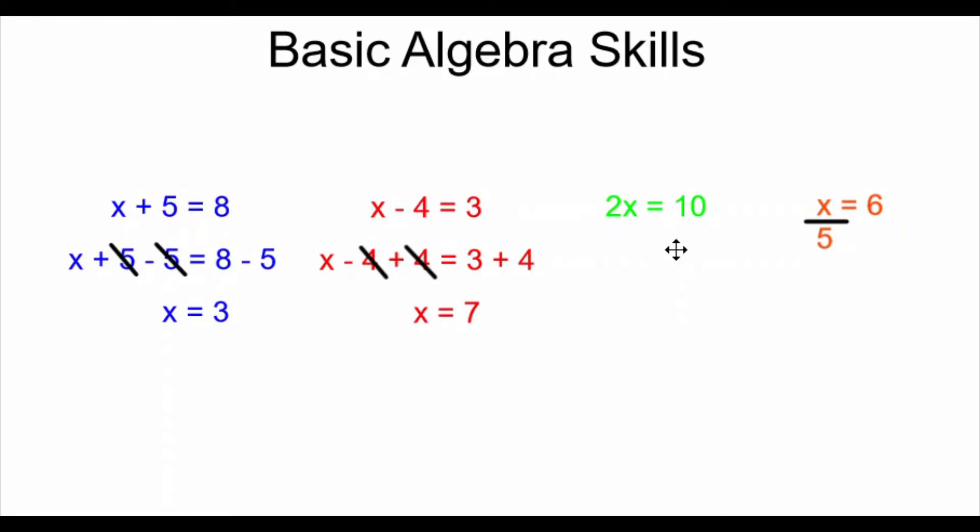In the third example, I have 2x equals 10. My x is having a 2 multiplied by it. I need to do the opposite. The opposite of multiplication is division. So I'm going to divide both sides of this equation by 2. These 2s cancel. My x is isolated. And 10 divided by 2 is equal to 5. I have x equals 5. I have my answer.